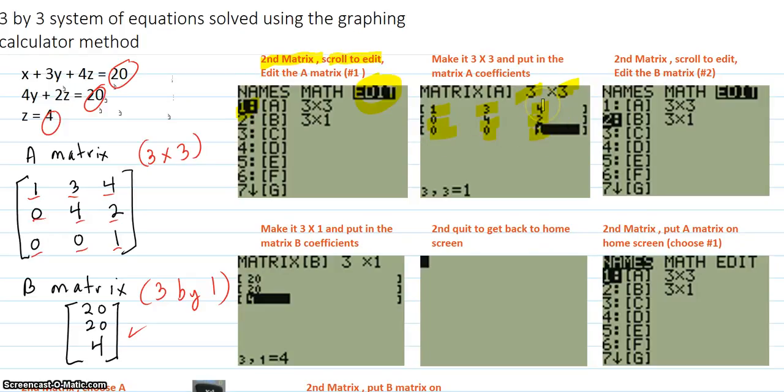Then you hit second matrix, scroll over to edit, and then down to number 2, and hit number 2, in order to get the edit screen for matrix B. Make that be a 3 rows by 1 column matrix, and put in the 20, enter, 20, enter, and 4, enter.